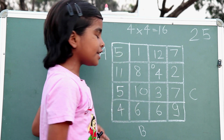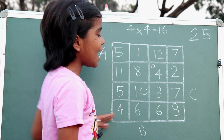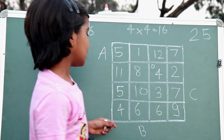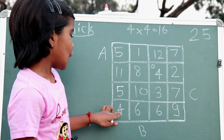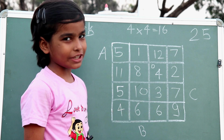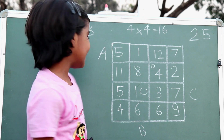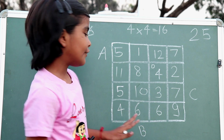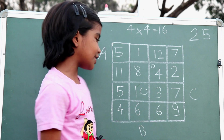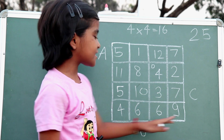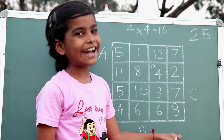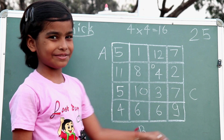Now let's add this one. When we add 6, how will it be? 10. And when we add 6, how will it be? 16. And when we add 9, how will it be? 25.